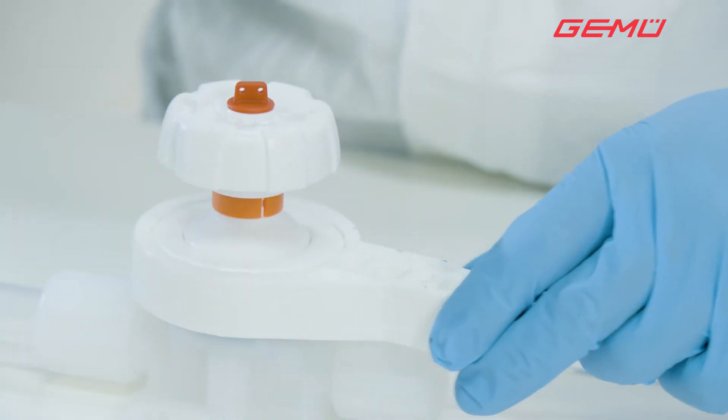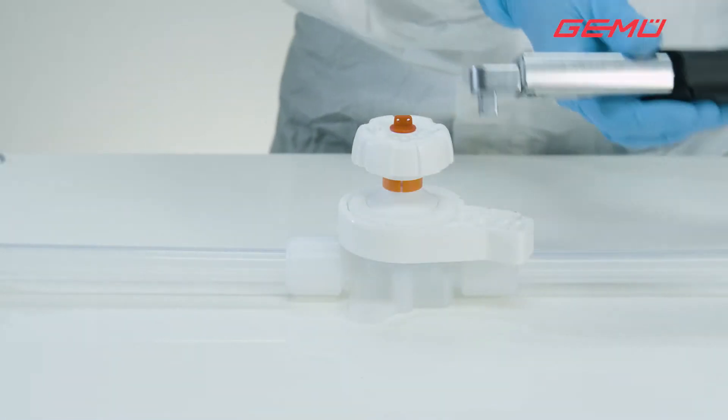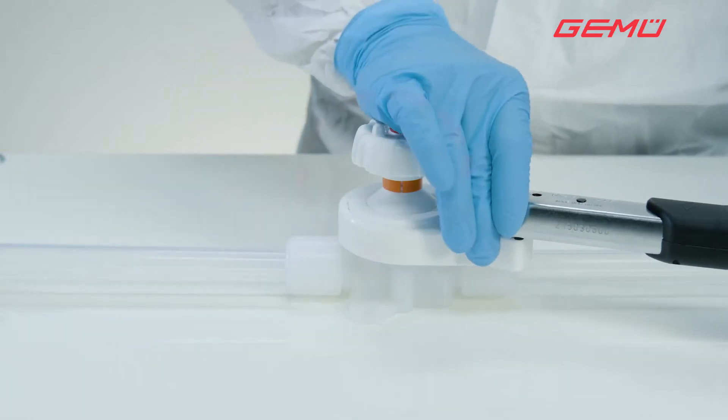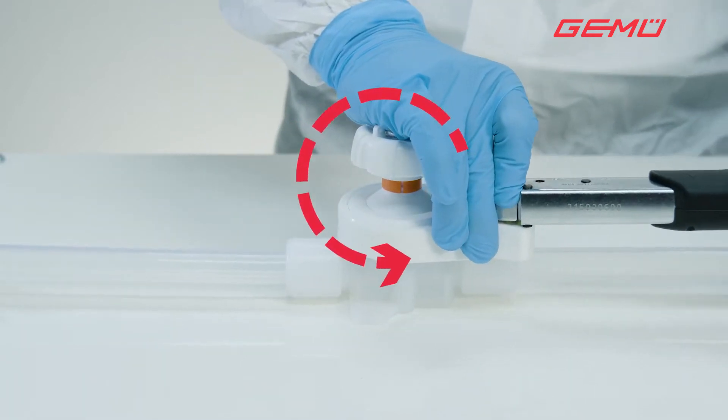Now position the GEMU Service tool in the correct position on the central nut and undo it anti-clockwise. A torque wrench can be used for assistance.